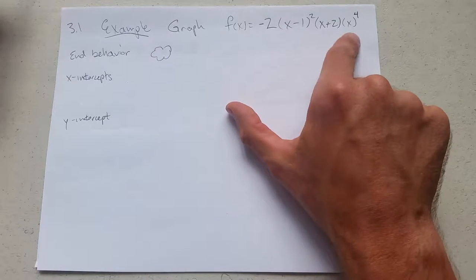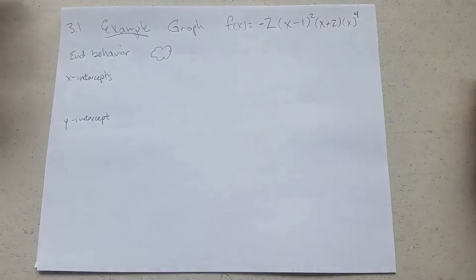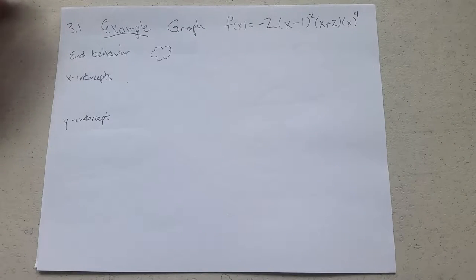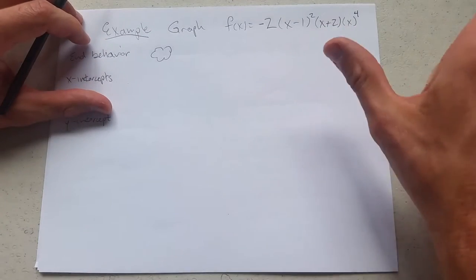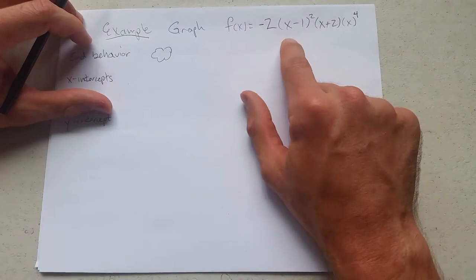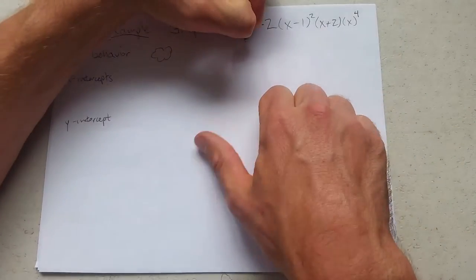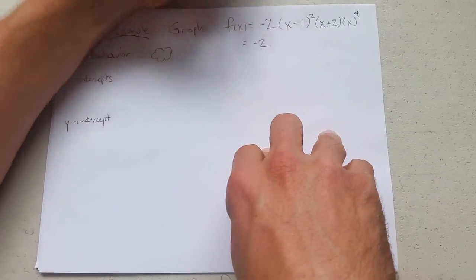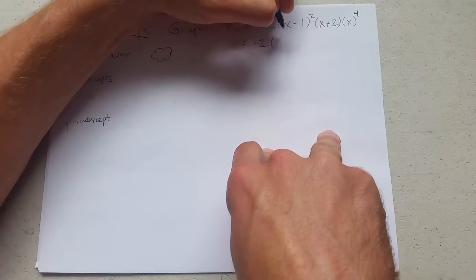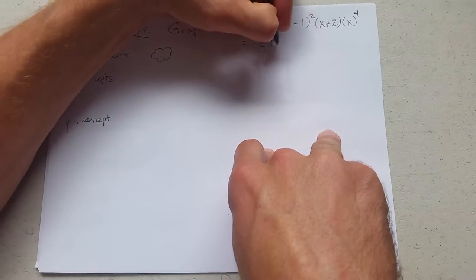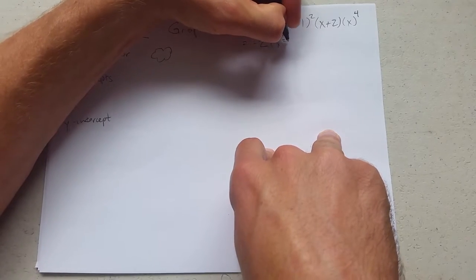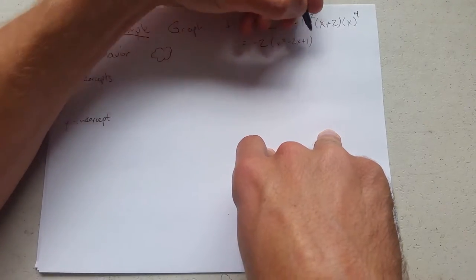First of all, this right here is in factored form. So how do I get this in expanded form? There's a few ways to do it. I'll do it algebraically. I'm not going to multiply a negative 2 in yet. x minus 1 squared. x squared minus 2x plus 1.